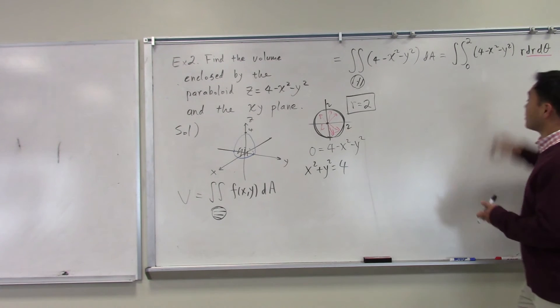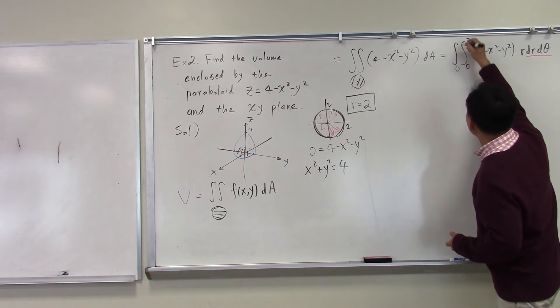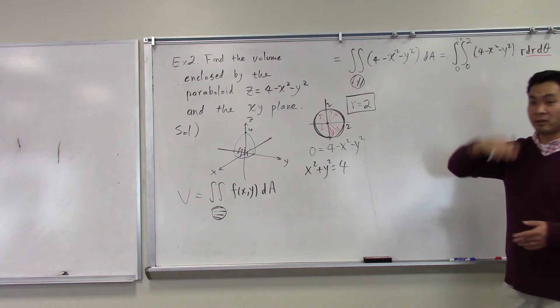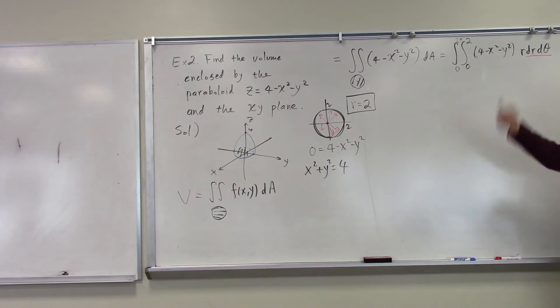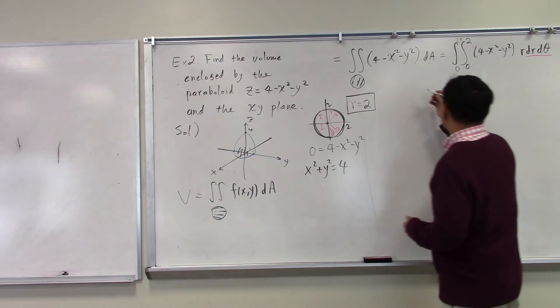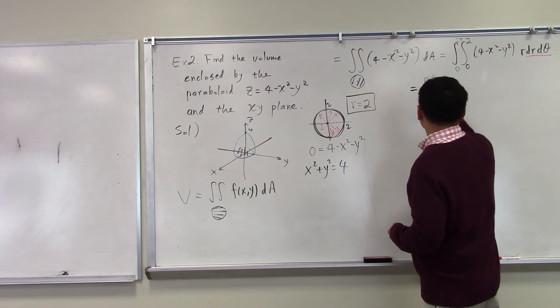And then, again, theta should go from 0 to 2π because the rays have to completely circle it. So, all right, now let's continue to compute.